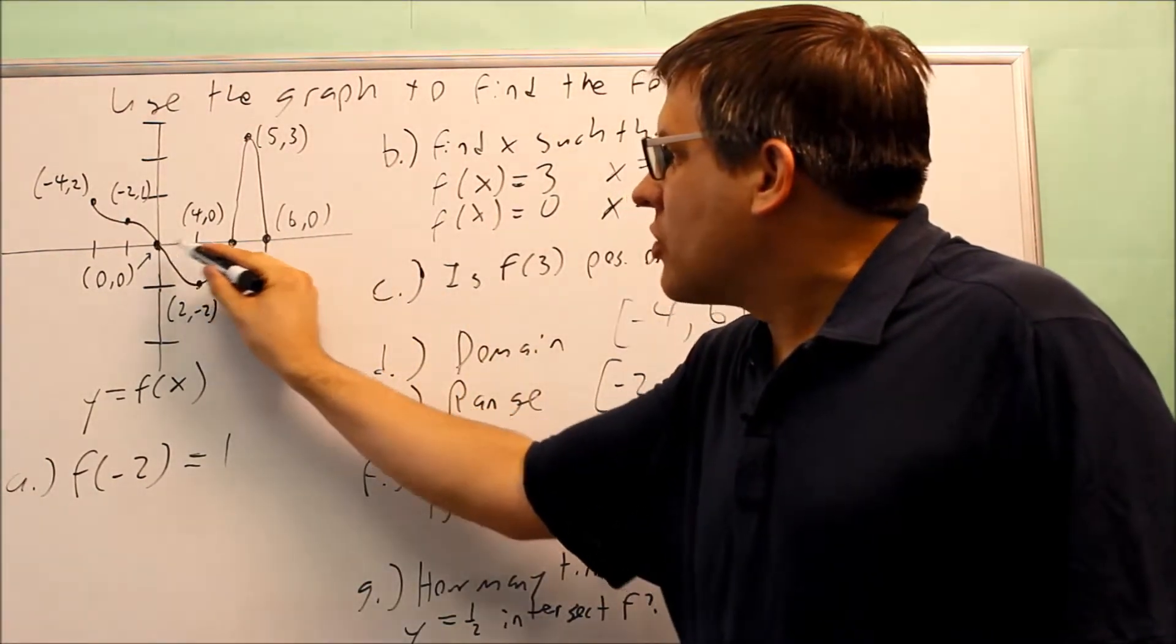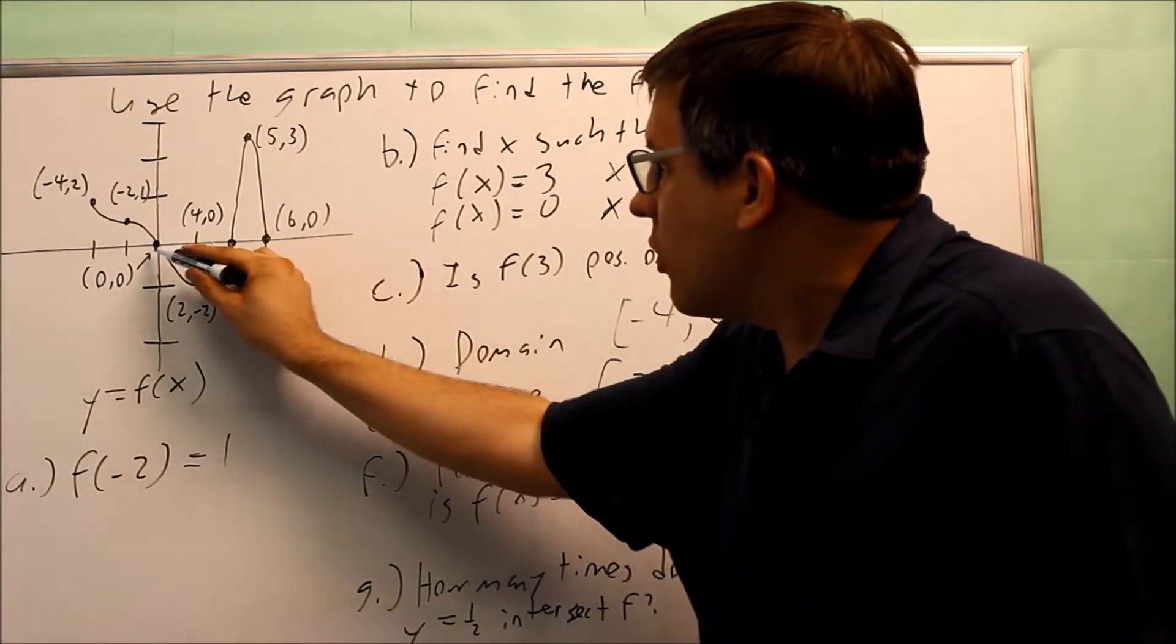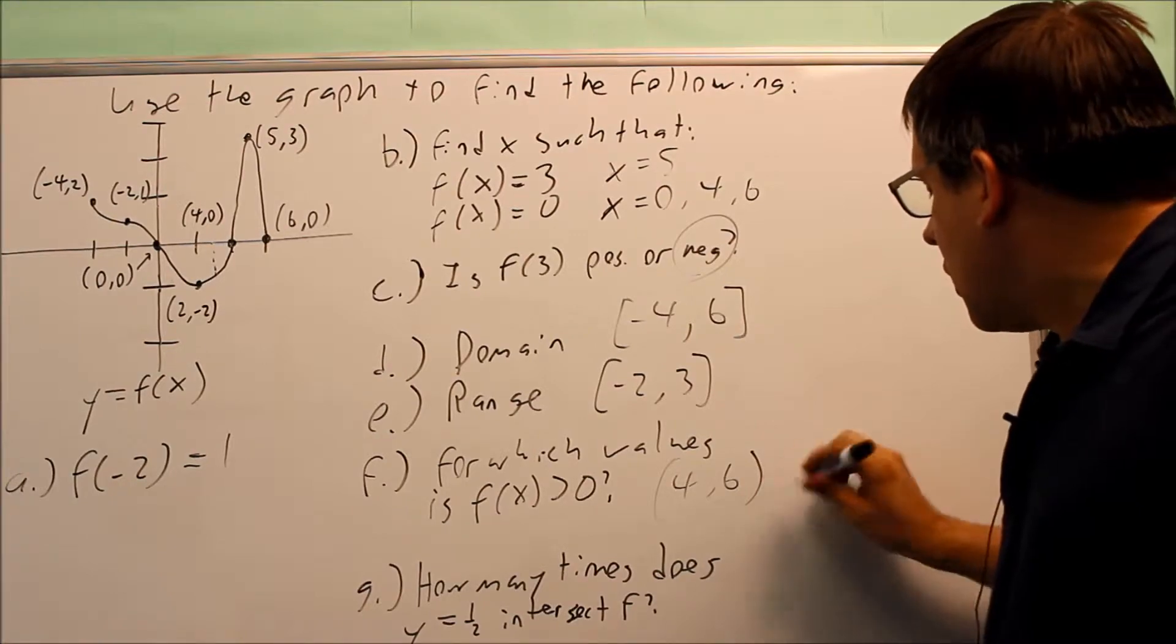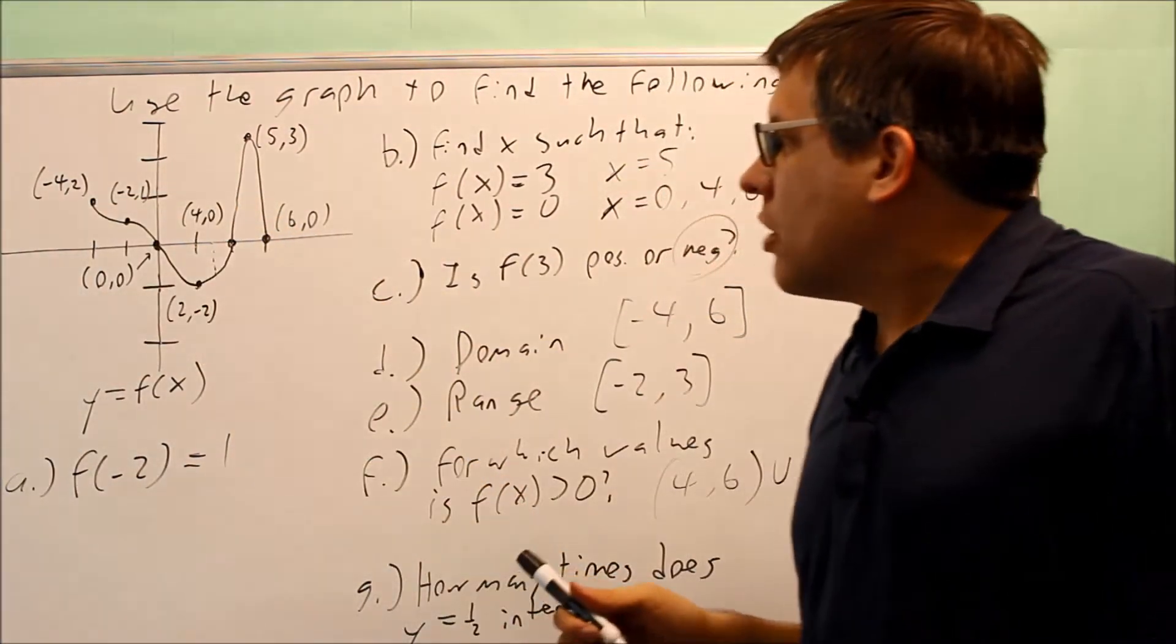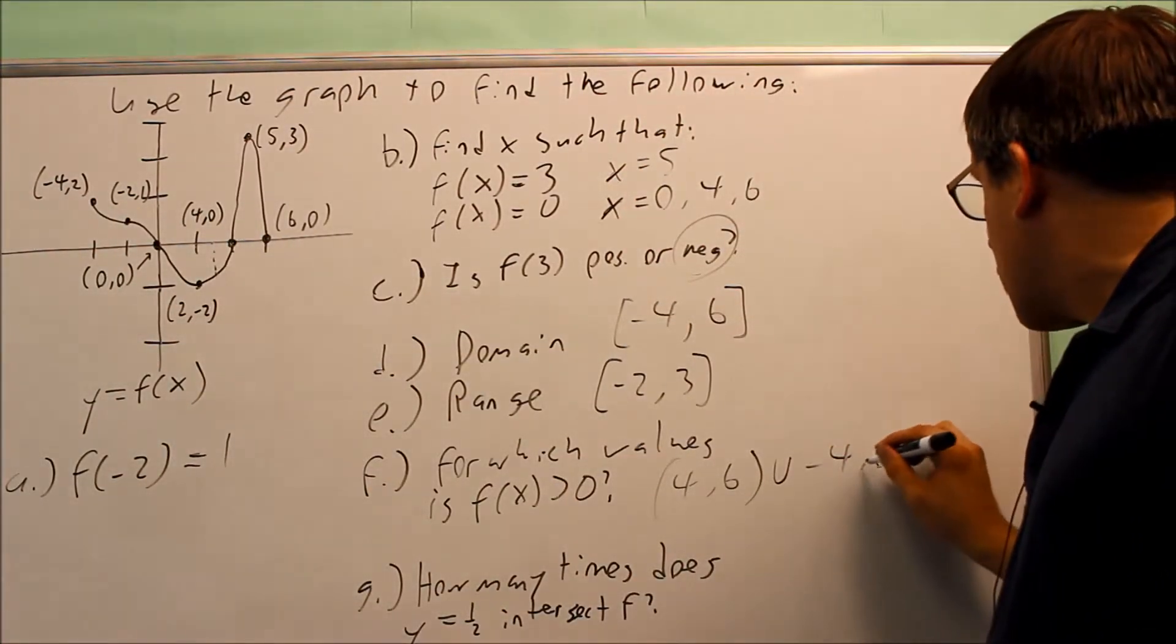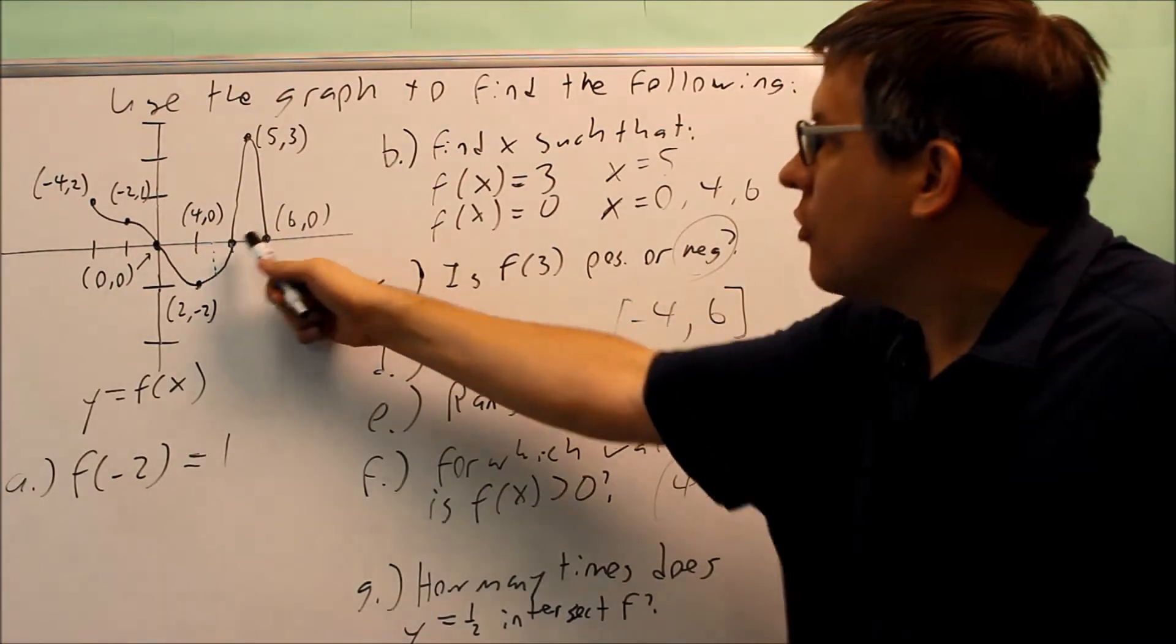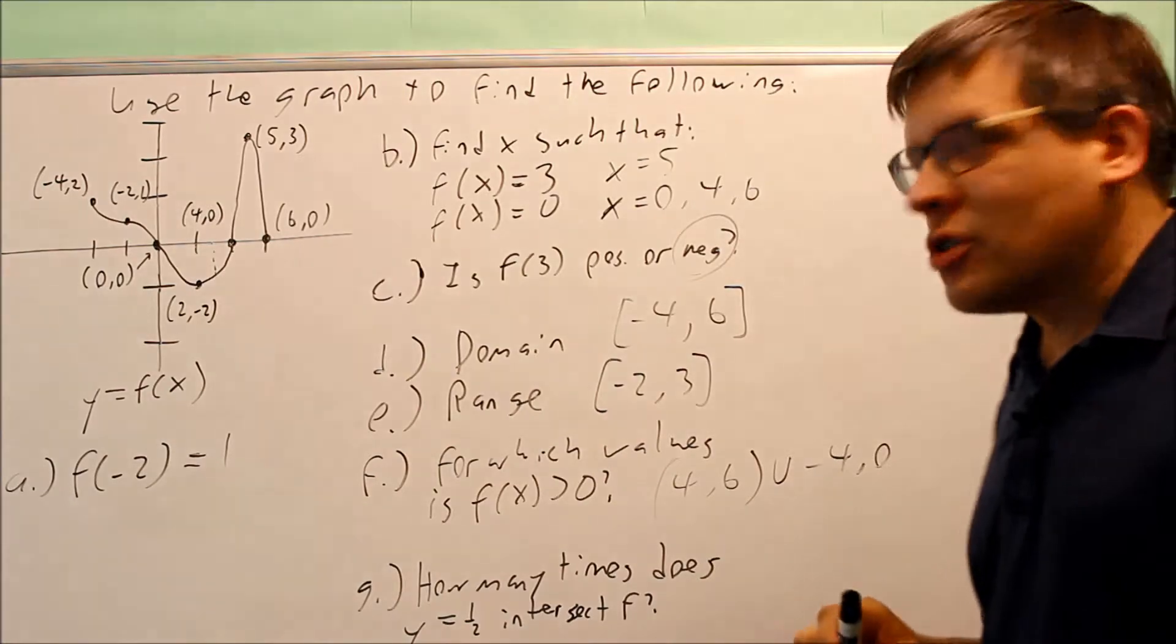If any of my intervals, the ones I'm indicating off the graph, if any of those touch the y-axis, I'm not allowed to include those—they must have parentheses. I have another section, so I'm going to put a union here. The other section is between the x value of -4 and 0—that's another spot where the graph is above the x-axis. Again, I'm only indicating x values here. Between x = 4 and 6, it's above the x-axis. Between x = -4 and 0, it's above.